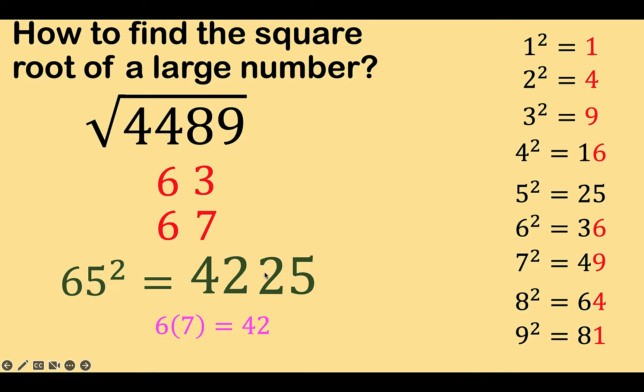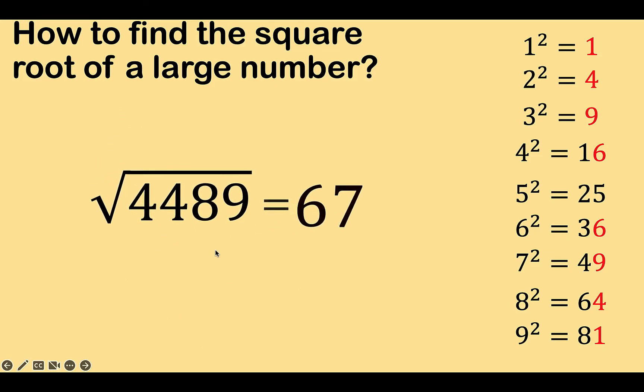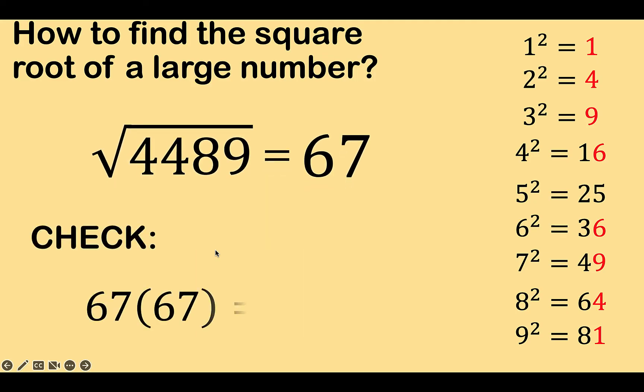Now, since this number is greater than 65 squared, then 63 cannot be the answer, because we expect an answer that's greater than 65 squared. And therefore, 67 must be the answer. And to check, we multiply 67 times itself, and indeed, the answer is 4,489. So the answer is 67.